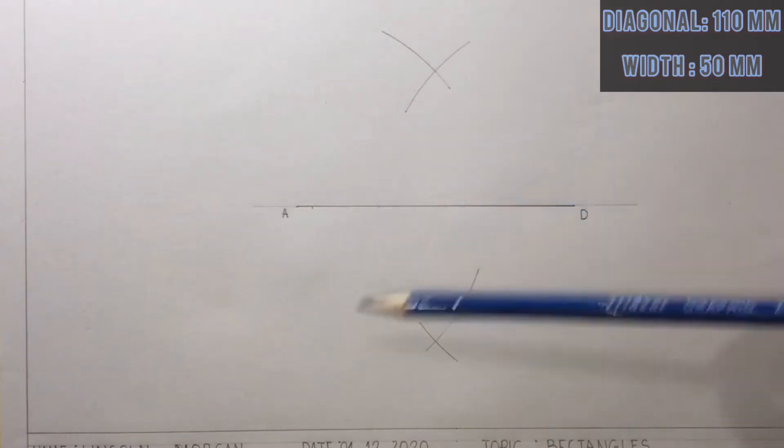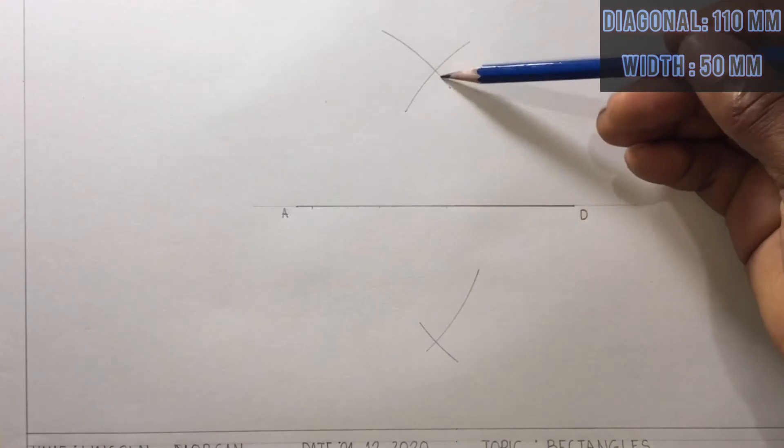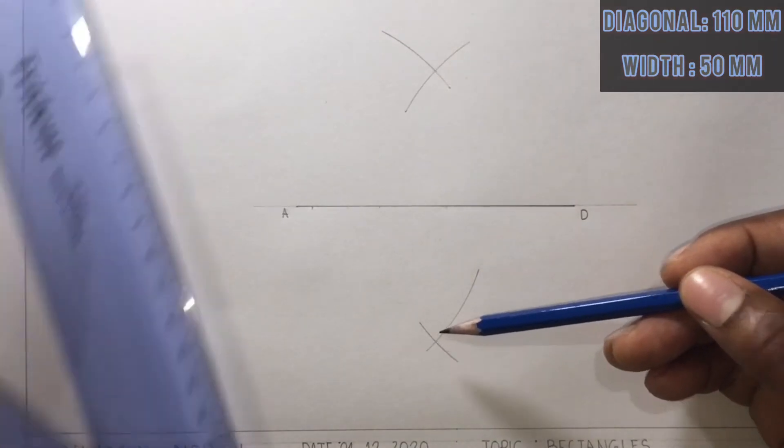Where the arcs intersect each other, I will draw a line through the intersection to get point O. From the intersection of this arc to this arc, I will draw a line.